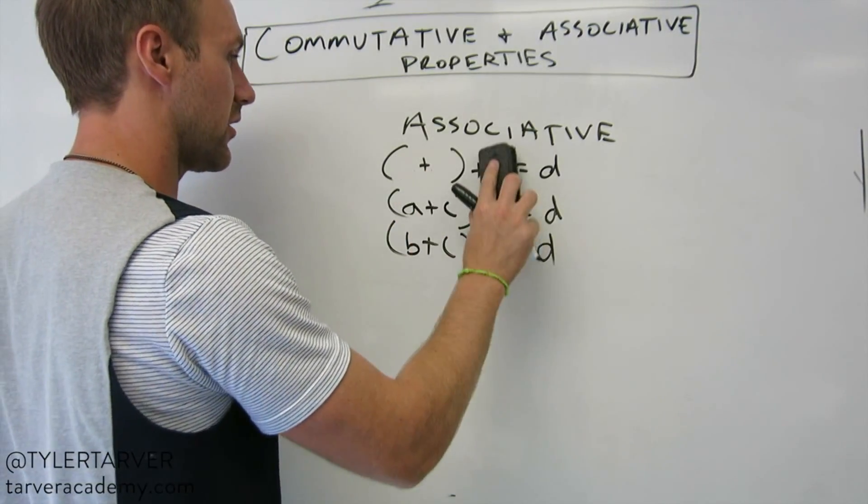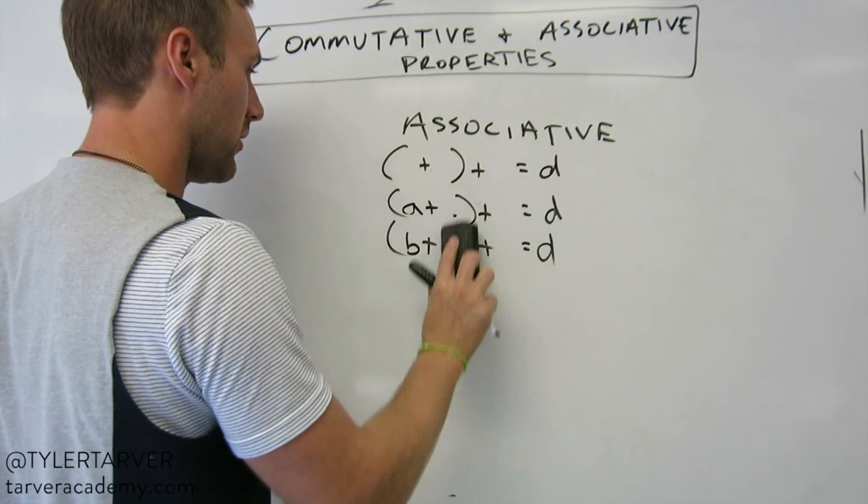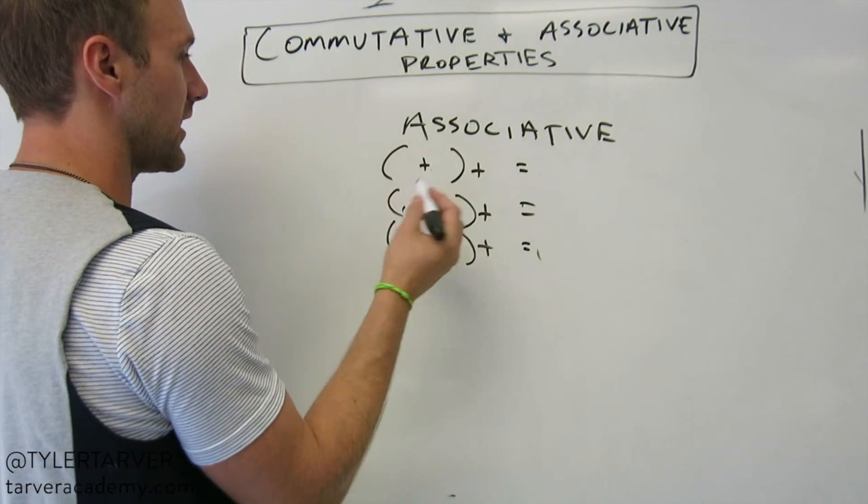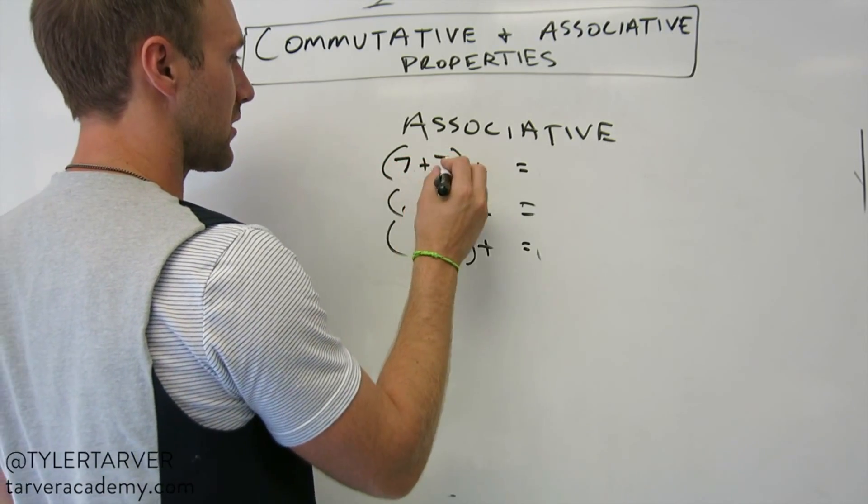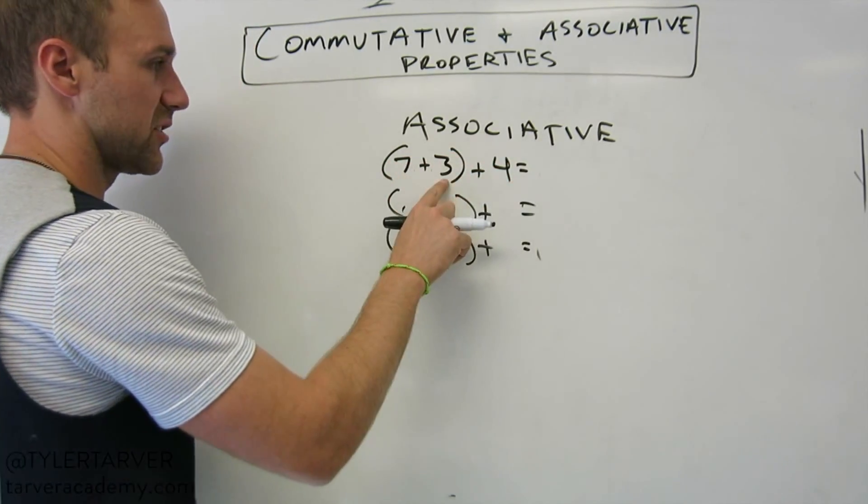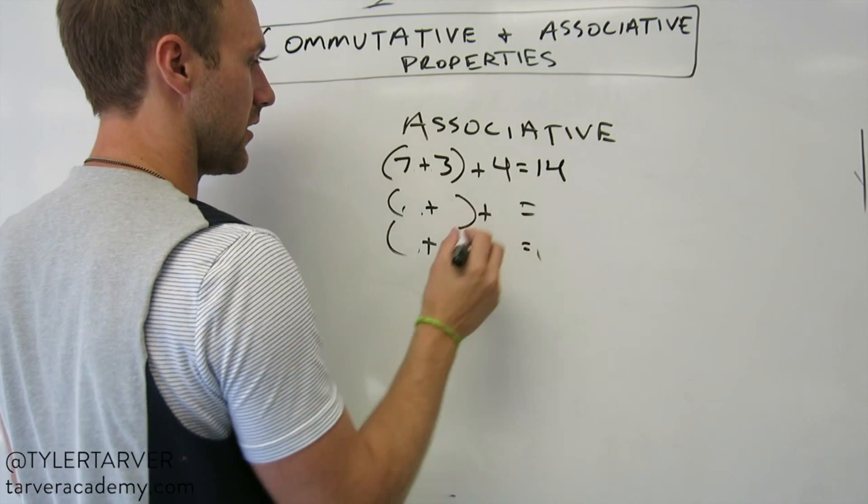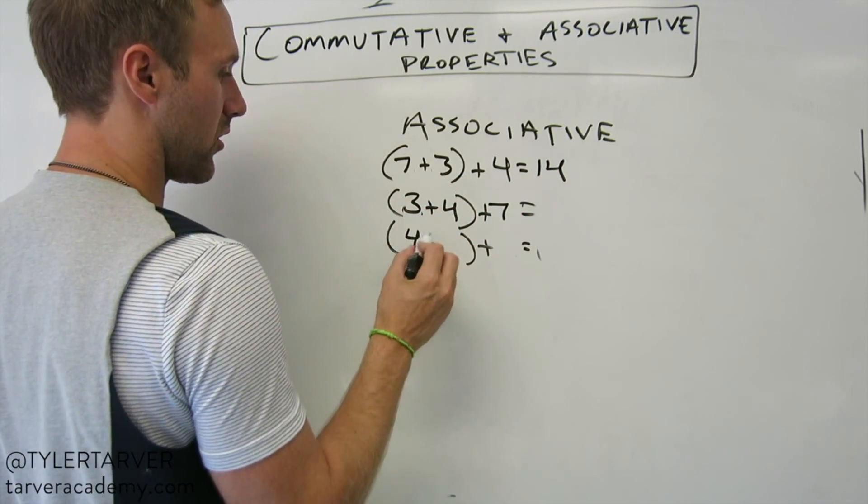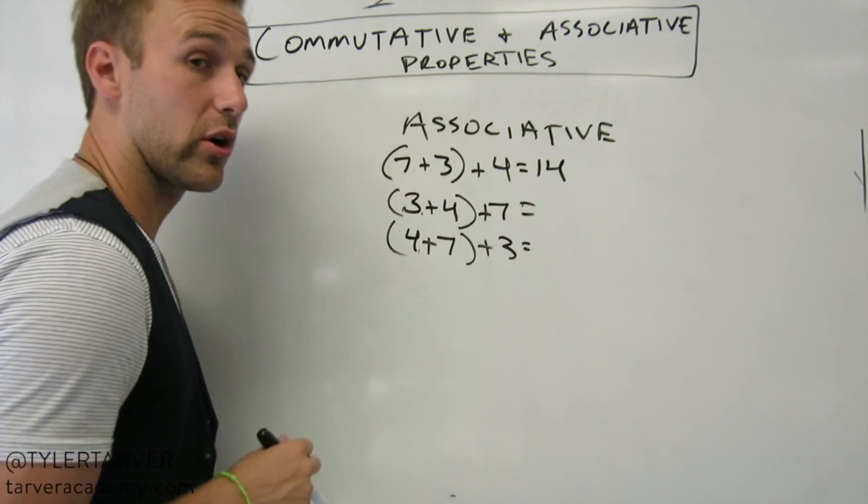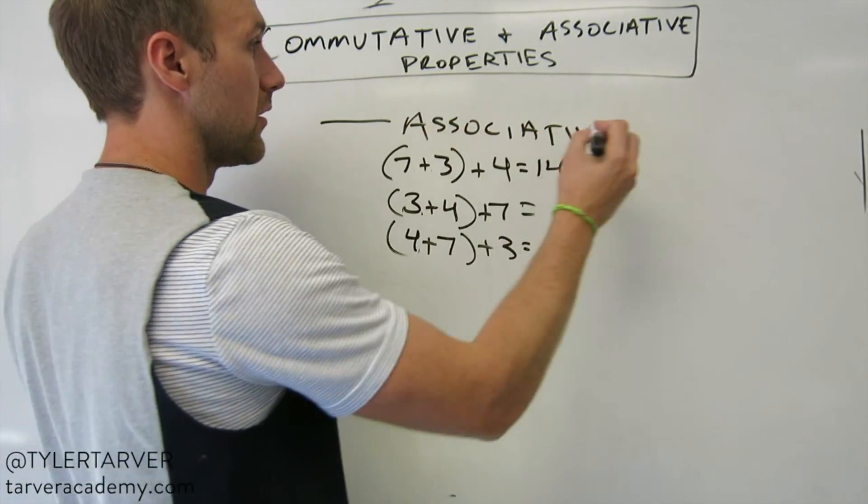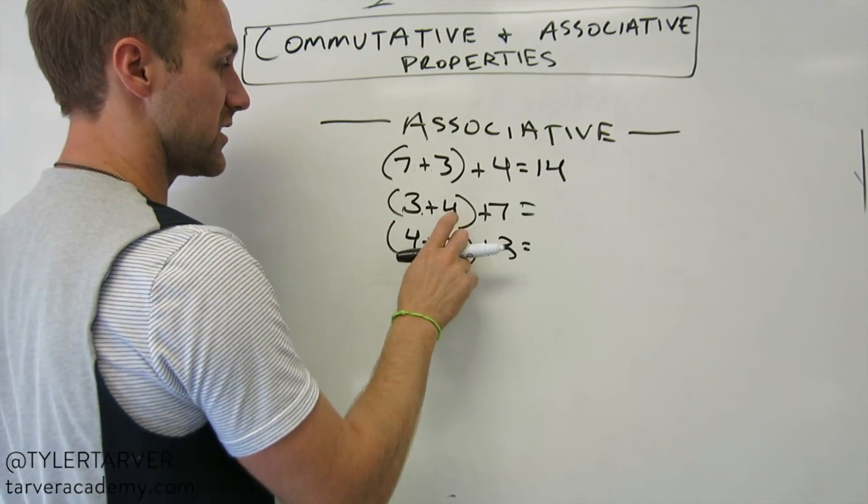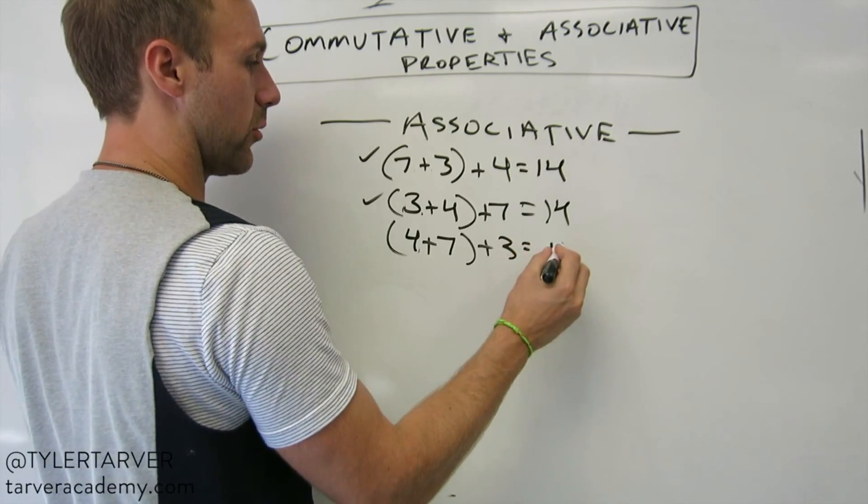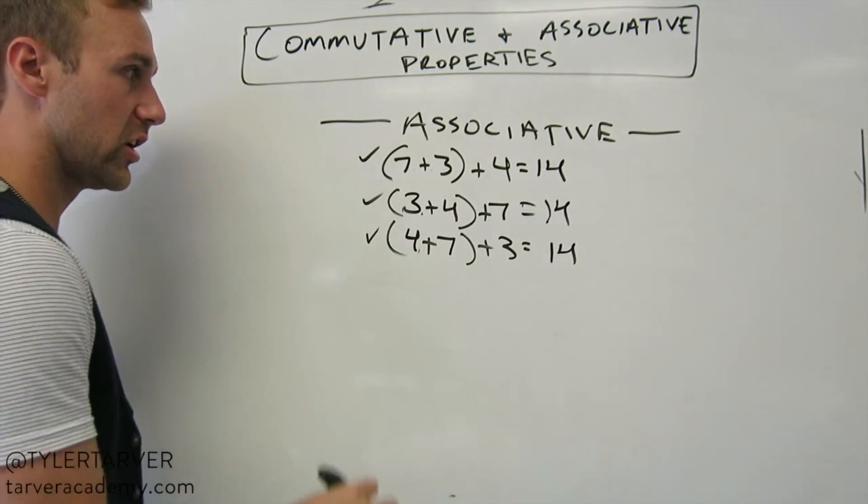For instance, let's use some numbers in it. Sound good? No, it doesn't. Well, let's do it anyways. Let's say we've got 7, 3, and 4. 7 plus 3 is 10, plus 4 is 14. Now let's do 3, 4, and 7, and then we'll do 4, 7, and 3. Let's see if these all work out. According to the associative property, it should. So 3 plus 4 is 7, plus 7 is 14. We're good. 7 plus 4 is 11, plus 3 is 14. We are still good.